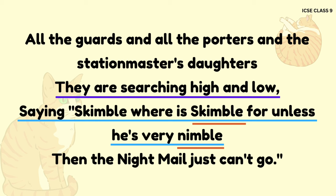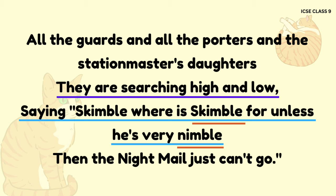All the guards and all the porters and the station masters' daughters, they are searching high and low, saying Skimble, where is Skimble. For unless he is very nimble, then the nightmail just can't go. The phrase 'they are searching high and low' is an example of hyperbole, because this phrase uses exaggeration to emphasize Skimble Shanks' importance. The phrase 'saying Skimble, where is Skimble' is an example of repetition, repeated in order to emphasize the urgency and importance of finding Skimble Shanks, the railway cat.